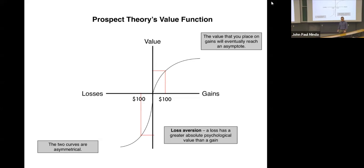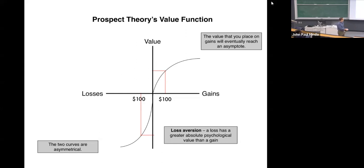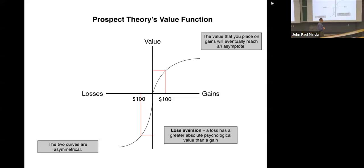Prospect theory suggests we treat gains and losses differently. A loss of one hundred dollars has greater subjective impact than a gain of the same amount — the function is asymmetrical. This accounts for loss aversion, one of the central components of prospect theory: humans display both risk aversion and loss aversion, but we're particularly sensitive to losses of what we already have.